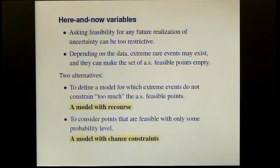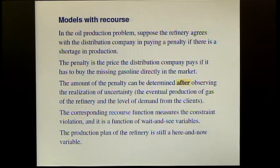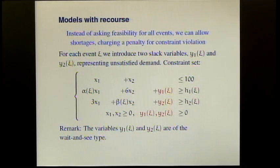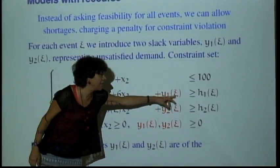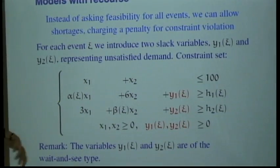As we have seen, we have two main possibilities: the model with chance constraints and the model with recourse. The recourse model uses the idea that if we're infeasible — if we made a mistake in our planning — we can look at the realization of uncertainty and go correct the mistake. This involves introducing variables Y that depend on the uncertainty — slack variables that will complete what is missing to attend the demand of each type of gasoline.